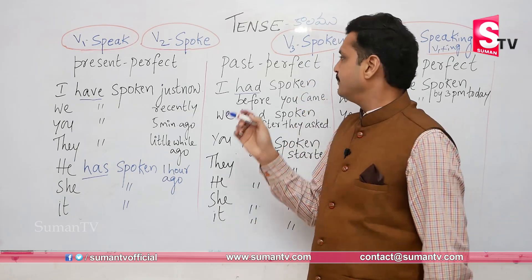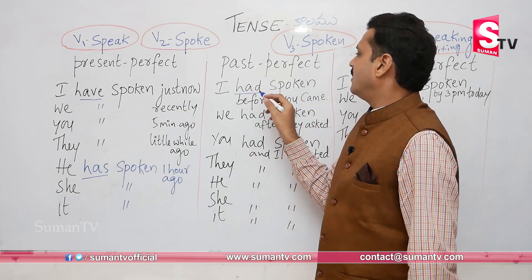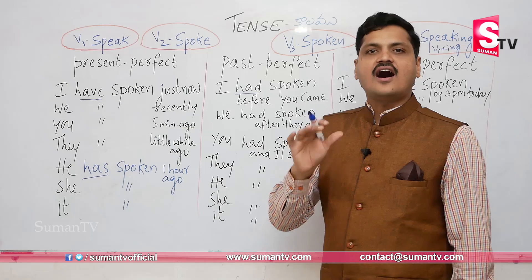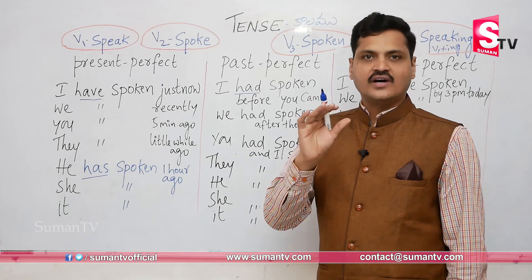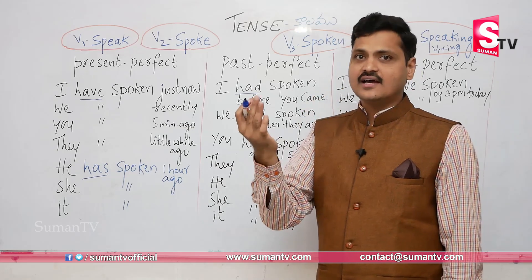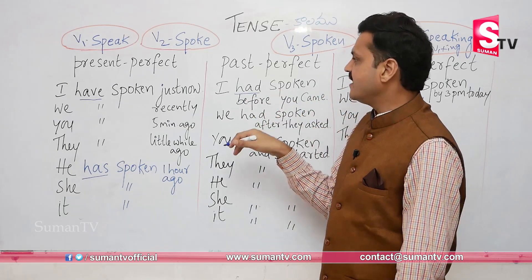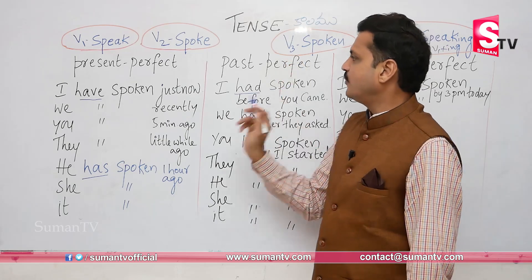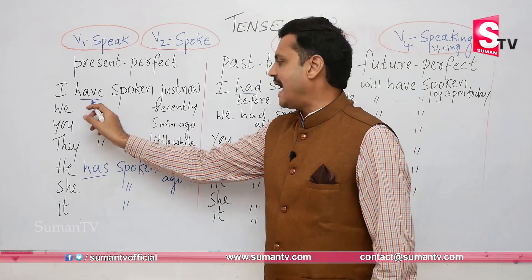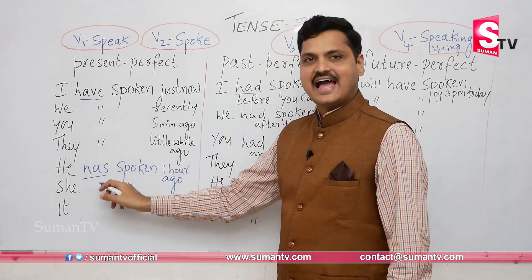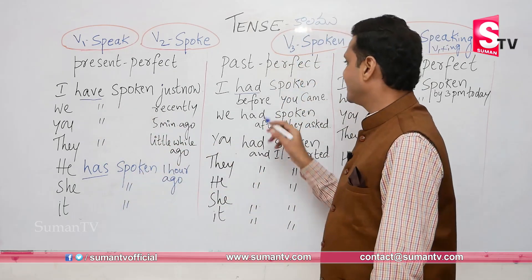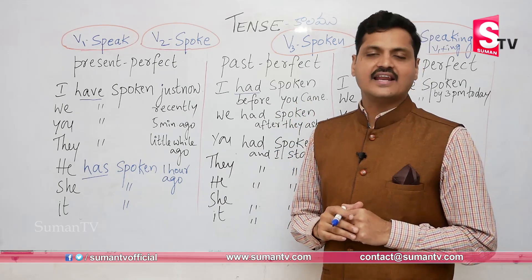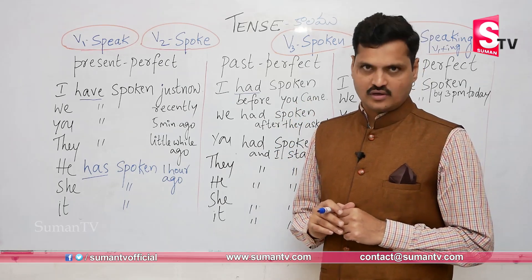In passive voice, am, is, are, was, were are followed by V3. But in tenses, before V3 we must always use have, has, or had — that is the grammar rule.